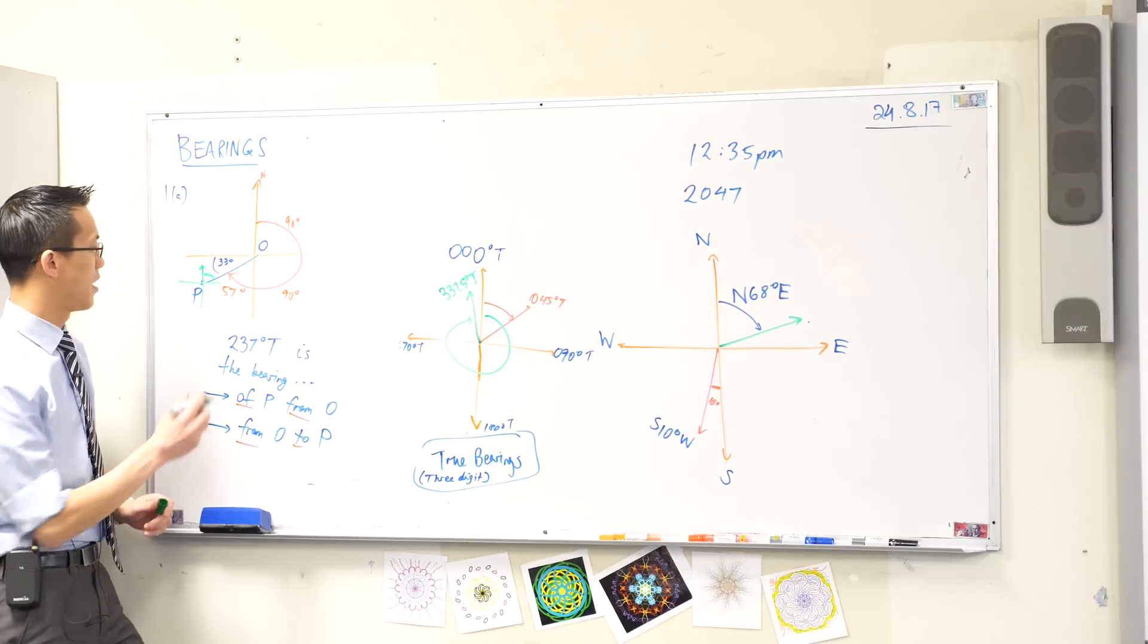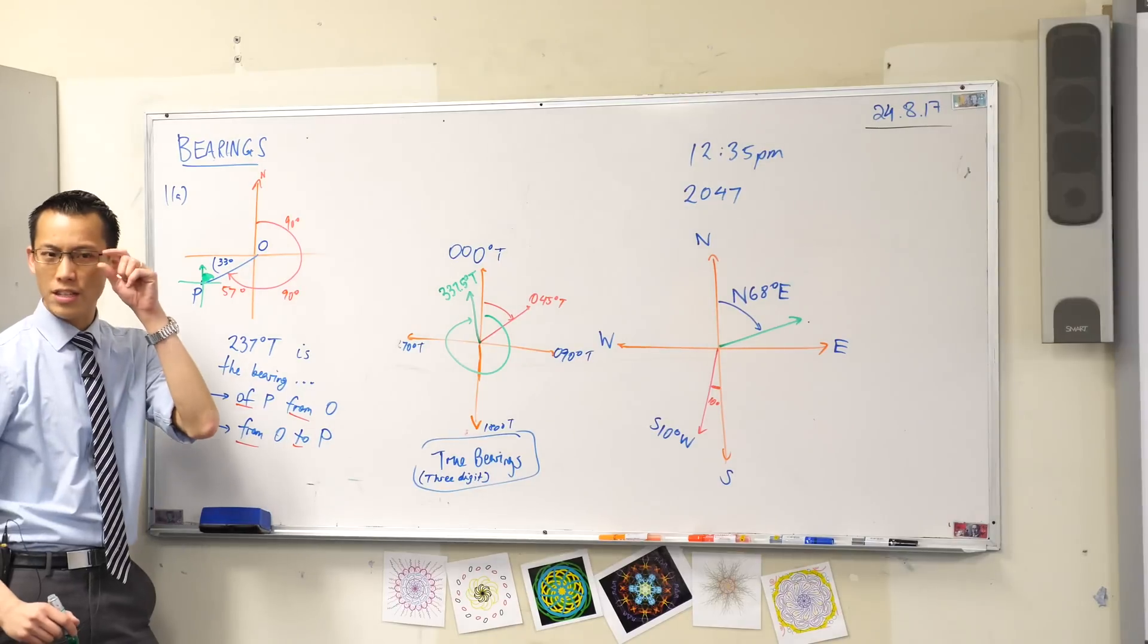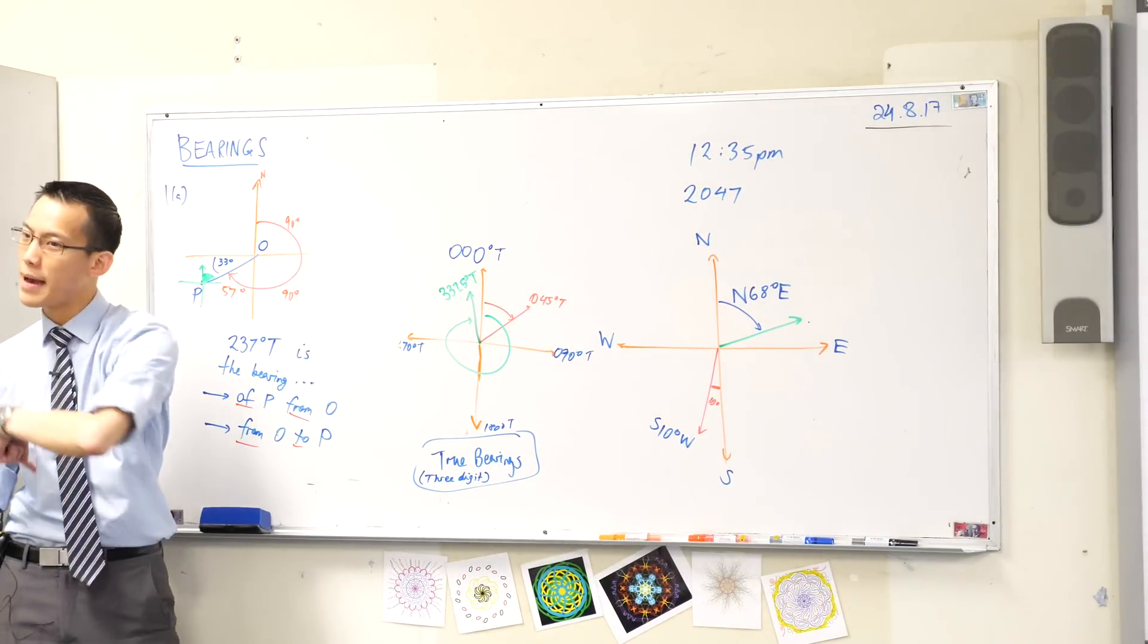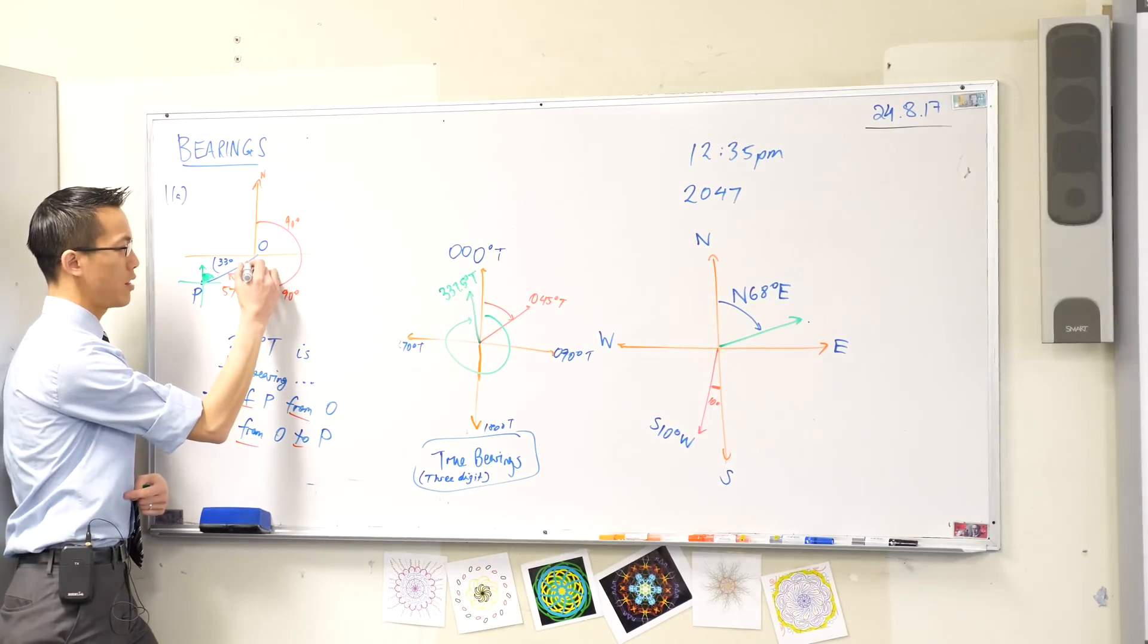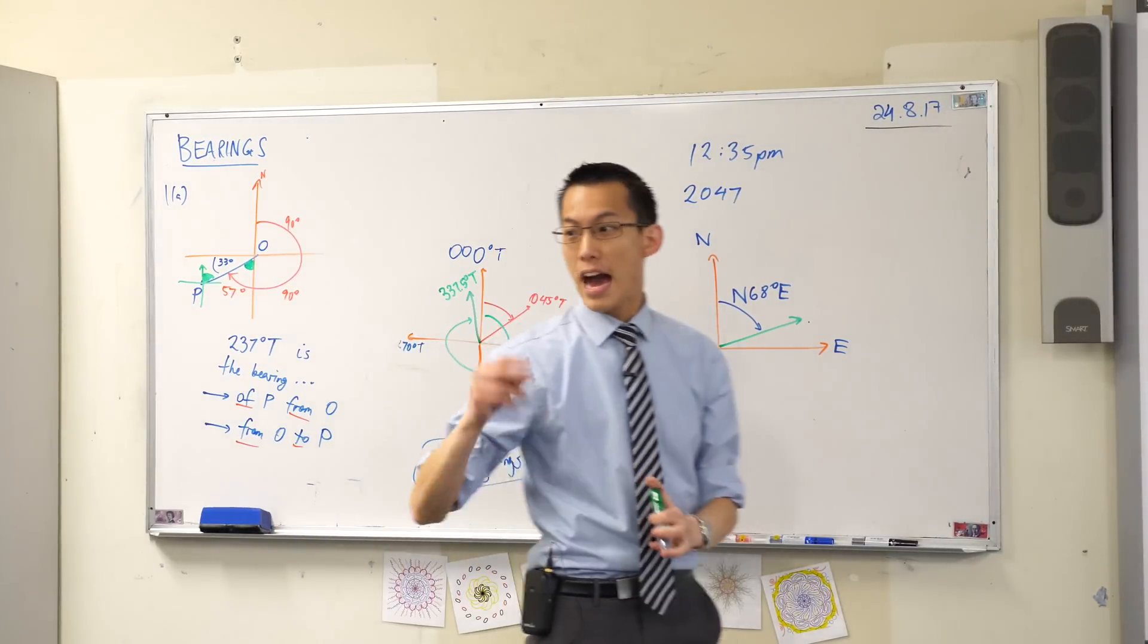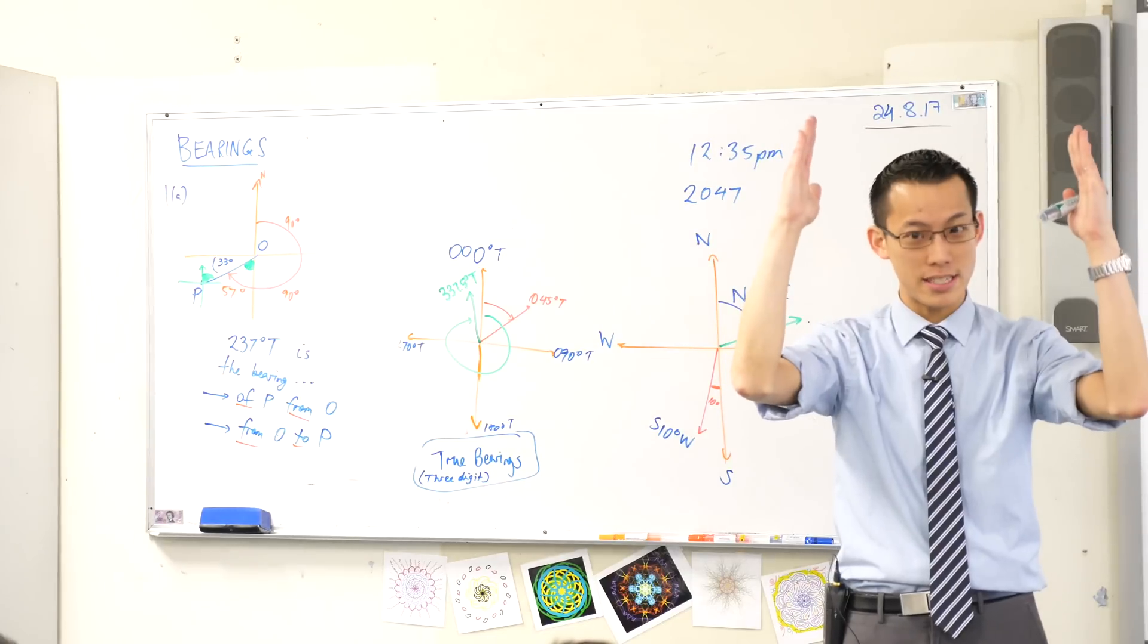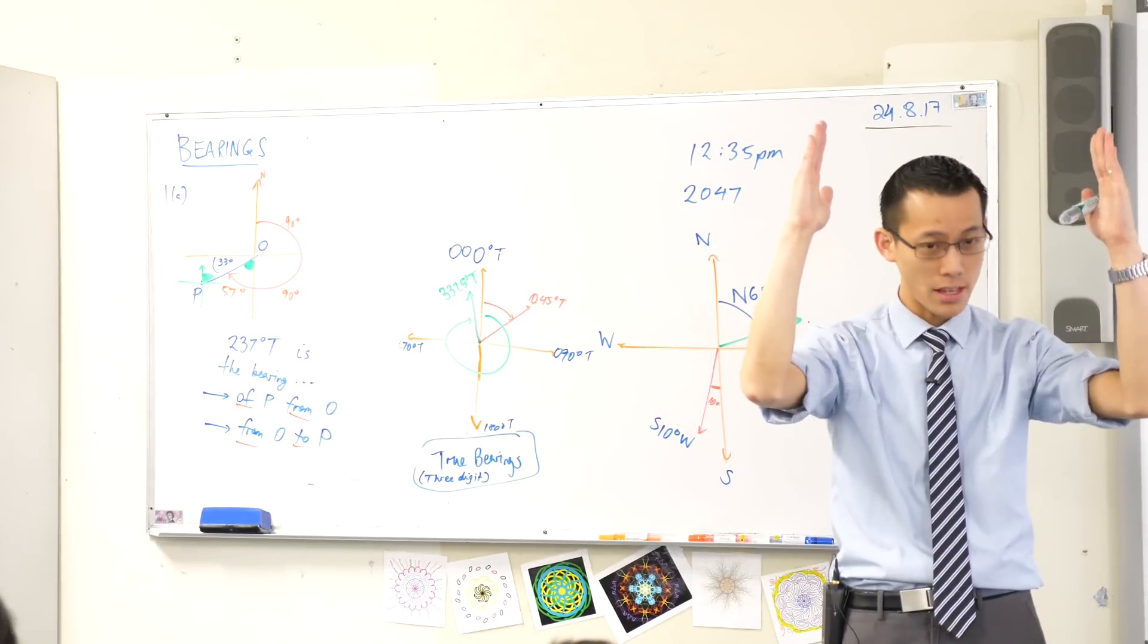I can give you two reasons why the answer is 57. Here's my first one. See this angle here? Do you notice it's related in a very specific way, think all the way back to year 7? With this angle. What's the relationship between those angles? They are alternate angles. Because every north line is facing in the same direction. Does that make sense?